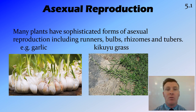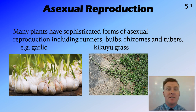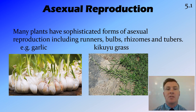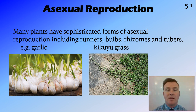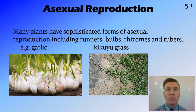Plants have a lot of different and sophisticated ways of going through asexual reproduction. This includes runners. Kikuya grass, for example, will send out runners that are above the ground, which spread the organism. But if they're cut off, they have their own root structure to create another organism.